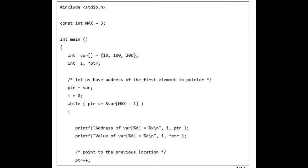#include <stdio.h>. const int MAX = 3; int main() { int var[] = {10, 100, 200}; int i, *ptr; /* let us have address of the first element in pointer */ ptr = var; i = 0;